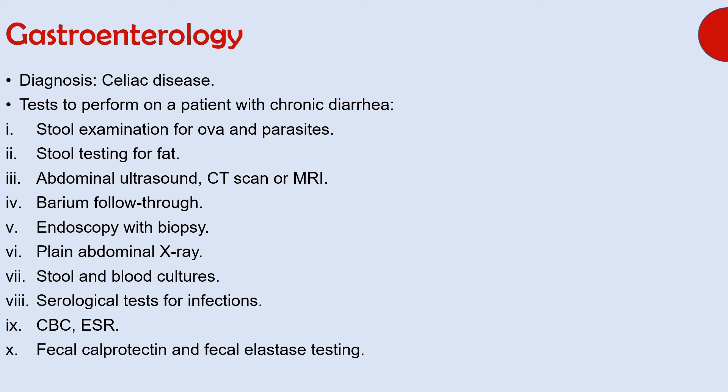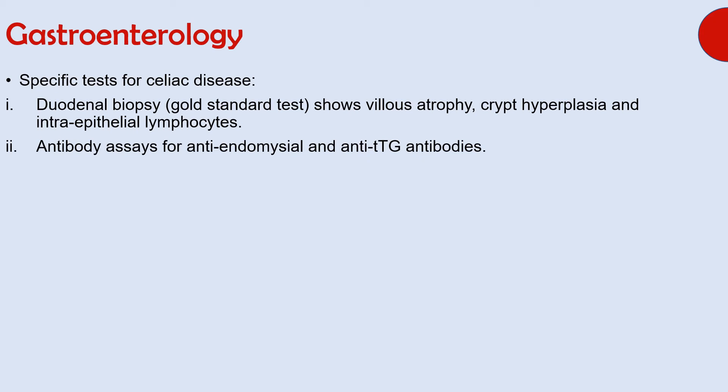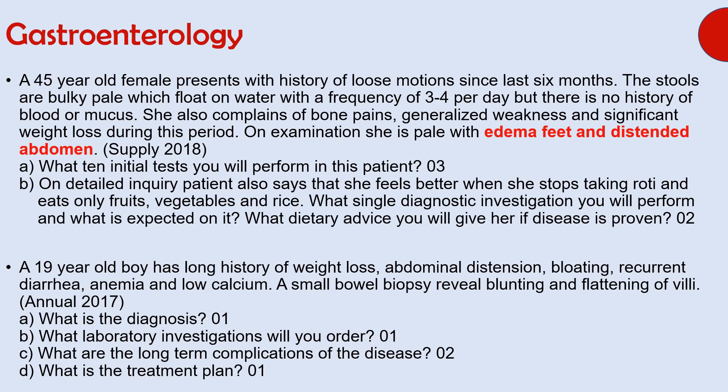Specific tests for celiac disease are duodenal biopsy — which is the gold standard and shows villous atrophy, crypt hyperplasia, and intraepithelial lymphocytes — antibody assays for anti-endomysial and anti-tissue transglutaminase antibodies, and complete blood count and biochemical tests such as serum calcium, vitamin D, total protein, and albumin levels. Total protein and albumin levels are also decreased in celiac disease, resulting in edema as described in one of the scenarios.